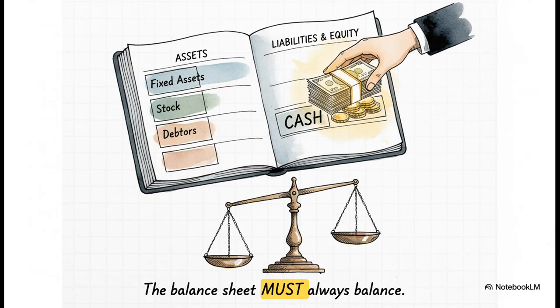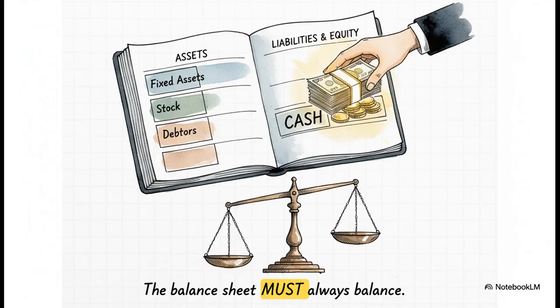So, let's take stock. We have our fixed assets, we have our total stock, and we have our debtors. There is just one missing piece on the entire asset side of our puzzle. And this final step beautifully illustrates the fundamental rule of accounting. The balance sheet must always, always balance.